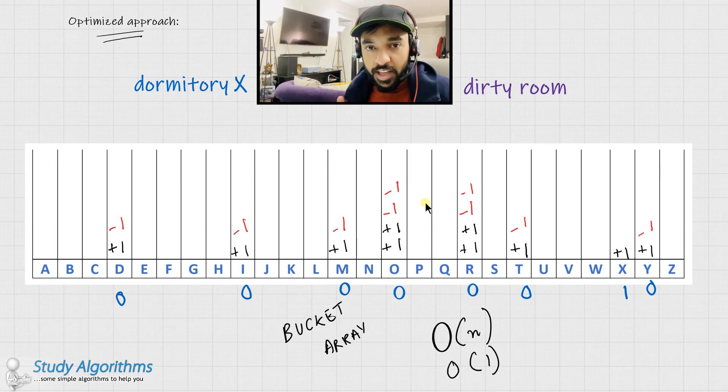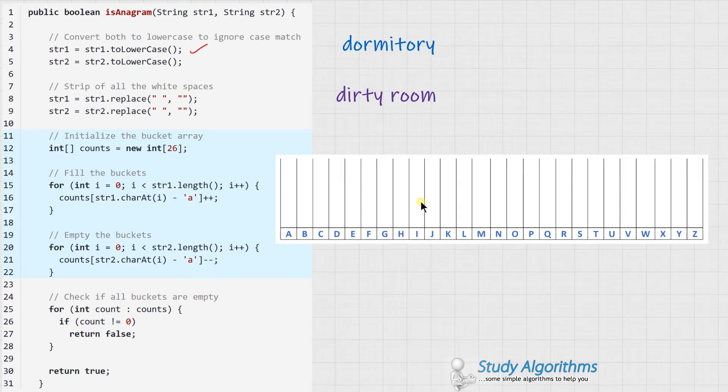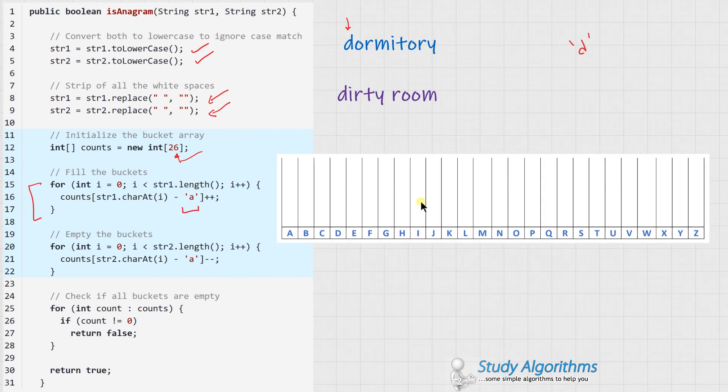Let us try to do a dry run of this code and see how this works. We start off by converting both of the strings to lowercase. This would ensure that we are ignoring the case match while comparing both the anagrams. Next we remove all the white spaces from both of the strings. Then we initialize a bucket array with the initial count set to 0 for all the characters. We start off by traversing the first string one by one. To get the index value of each of the characters in the array, what we do is, we subtract the ASCII value of small a from the present character. This would mean that the character d minus character a would give you something like 3.